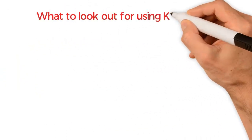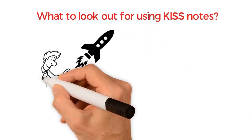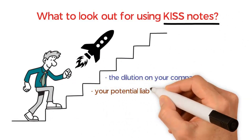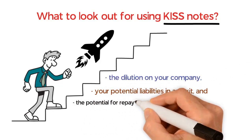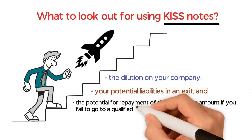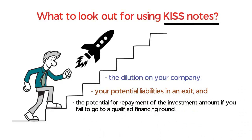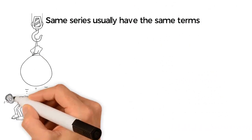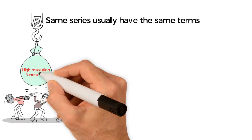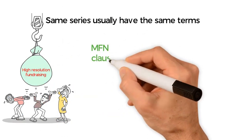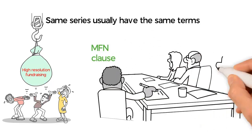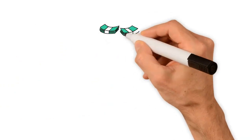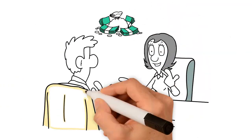What to look out for when using KISS notes: If you're a startup looking to use KISS notes, also keep a check on the dilution on your company, your potential liabilities in an exit, and the potential for repayment of the investment amount if you fail to go to a qualified financing round. Additionally, KISS notes in the same series usually have the same terms, so you might be limited when it comes to high-resolution fundraising. And if you have included an MFN clause, your ability to customize your convertible note to attract different investors may be affected. Remember that you decide the terms of your fundraising exercise, so remember to customize them right.